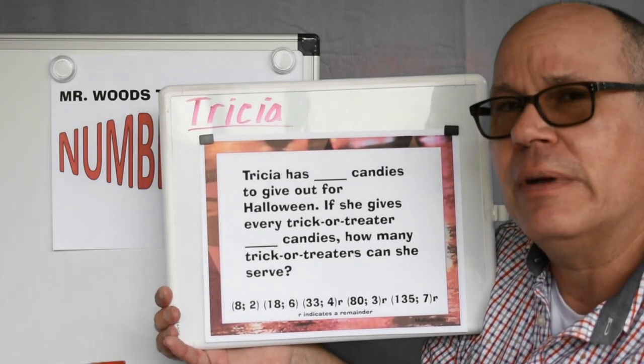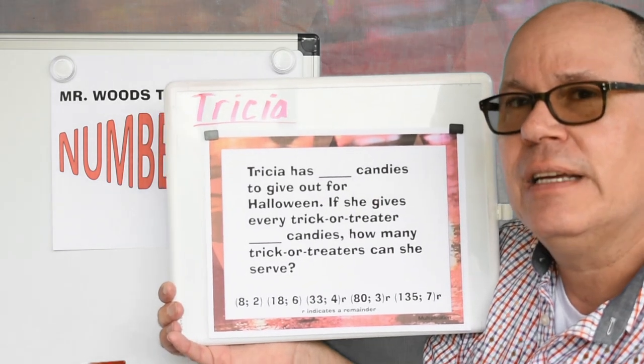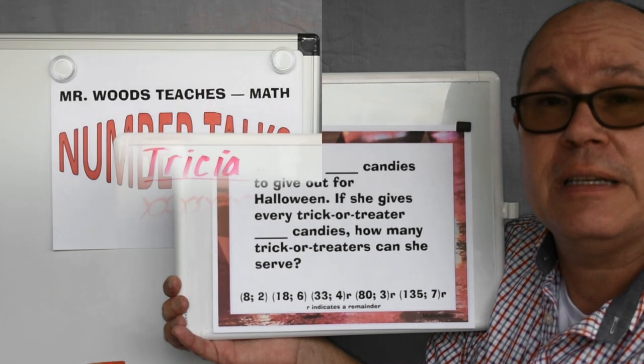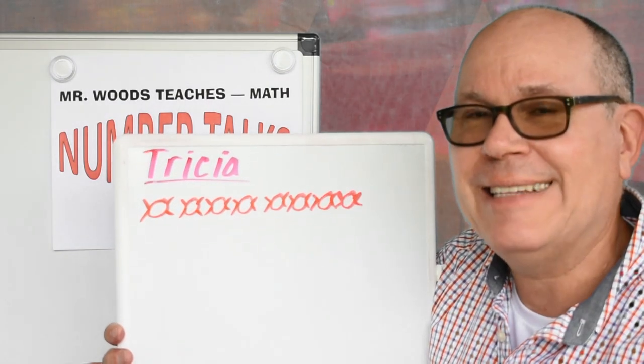How would you figure that one out? She has eight candies, and she's giving each two. Let's try something different. Okay, Tricia has eight candies.